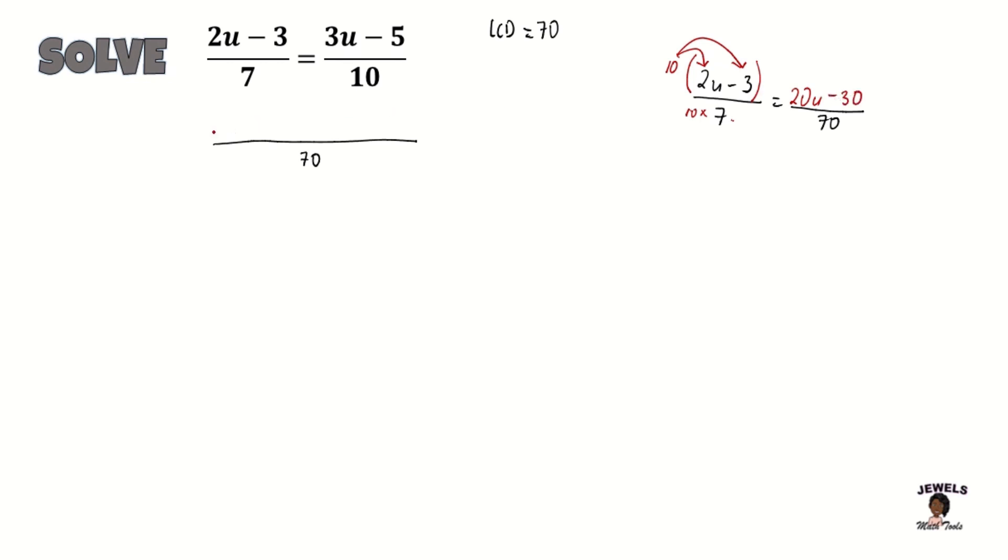So our first fraction's equivalent form is going to be 20u minus 30 all over 70. Now let's convert our second term, which is 3u minus 5 with a denominator of 10, changing this to its equivalent form where we have 70 as its denominator.